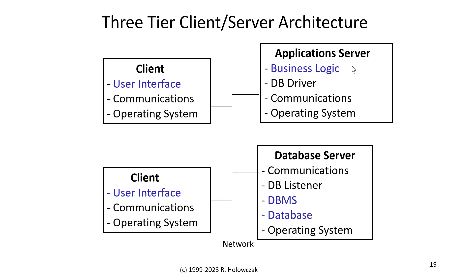Once the database server carries out that transaction, it hands back the results to the application server. The application server can continue processing with business logic, and then finally display the results to the user interface running on the client. This three-step dance happens over and over again in the three-tier client server architecture.